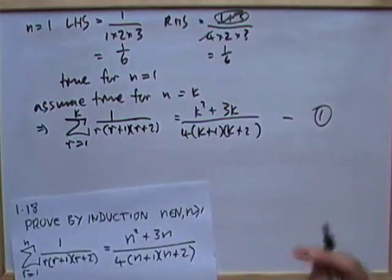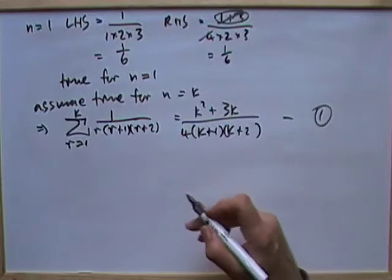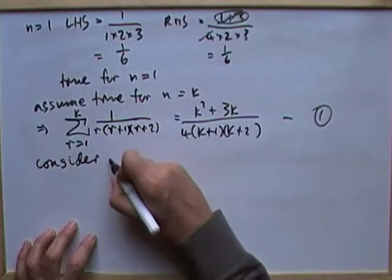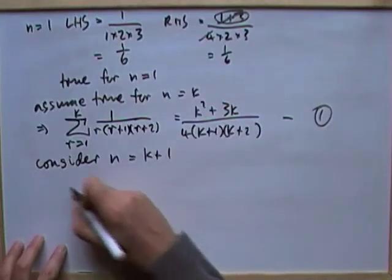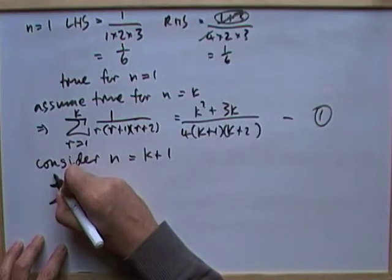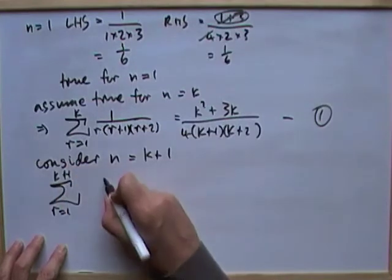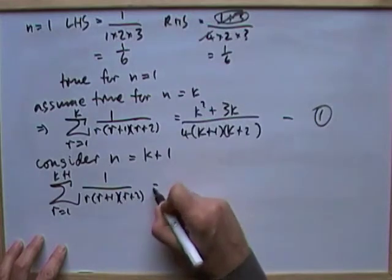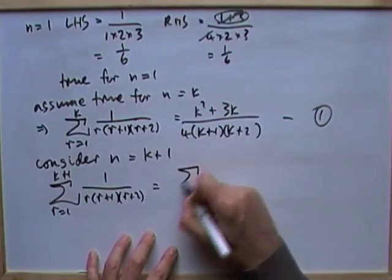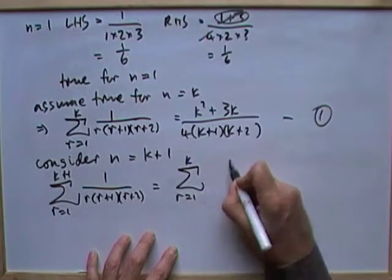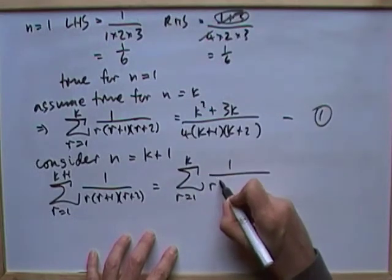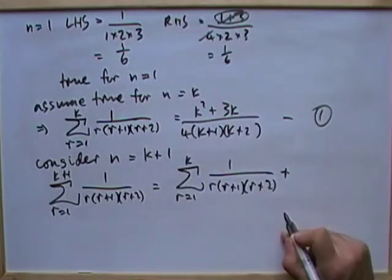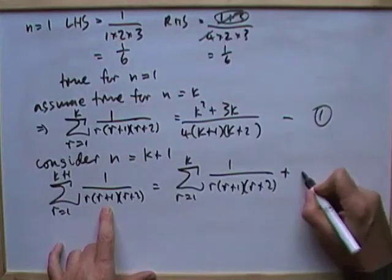Remember, you're always going to have to call this inductive hypothesis into play. Next, consider n equals k plus 1. That means I'm considering this expression then, I've got r equals 1 to k plus 1 of r times r plus 1 times r plus 2. Well, that would be the same as the first k terms of all of that, r times r plus 1 times r plus 2, plus the extra term.